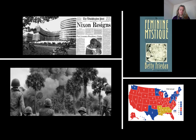Nixon would win the election with 301 electoral votes compared to the 191 electoral votes gathered by Hubert Humphrey, the Democratic candidate. For the time, it was completely unheard of for a politician to lose a federal race — such as the presidential election of 1960 — then lose a state race like the gubernatorial race of California in 1962, and somehow come back to win a federal race again in 1968. But Richard Nixon was the exception.